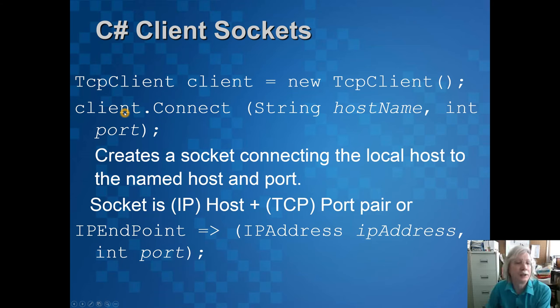We can connect this TcpClient to the remote computer by calling the Connect method and we pass it a string which contains the name of the computer we want to connect to, and the second parameter is the port number we want to connect to. That creates what we call a socket that connects the local host to the named host and port on the remote computer.